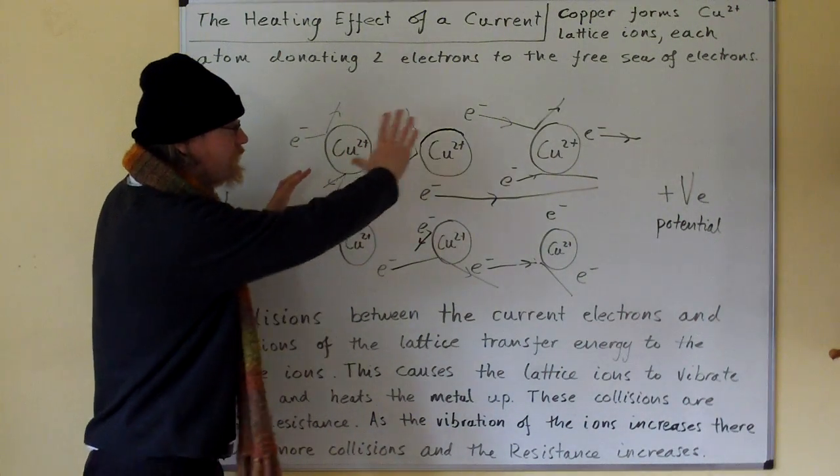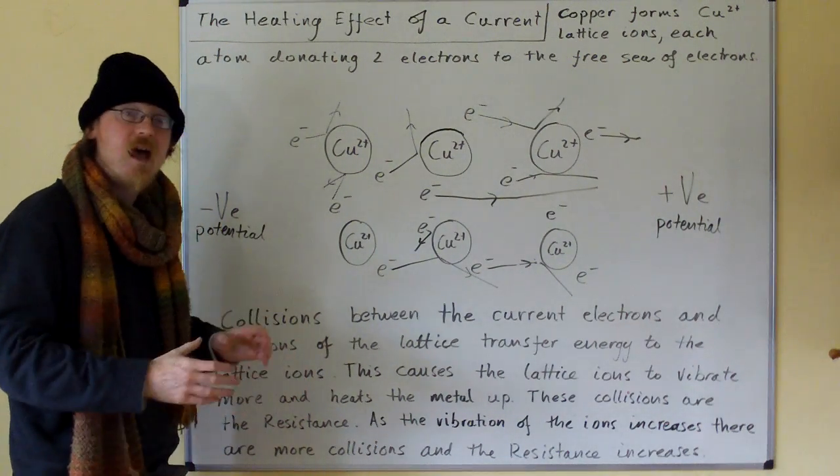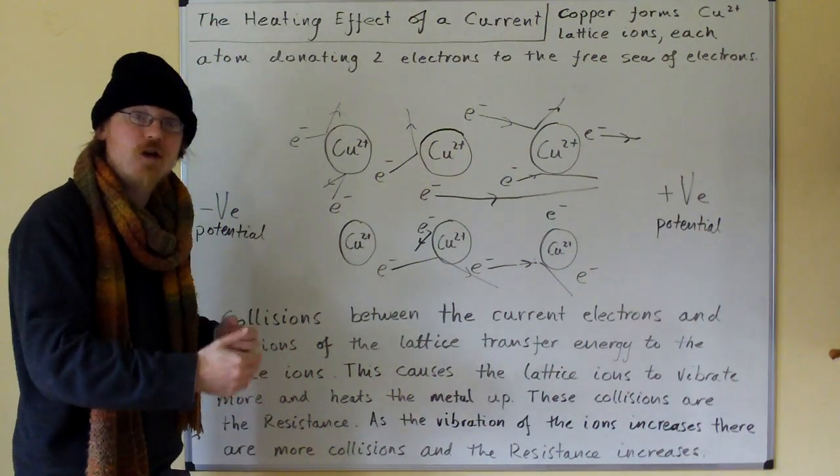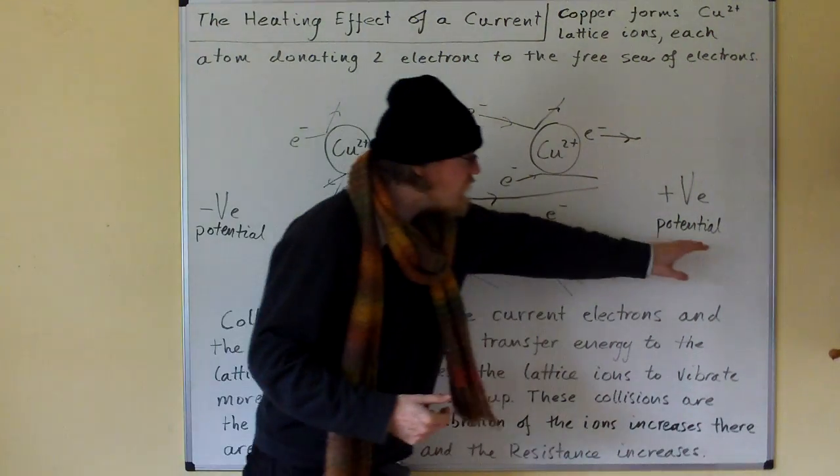Now, the electrons exist in a free sea around this lattice moving randomly until we apply a potential across the material. We make this side negative and we make this side positive.